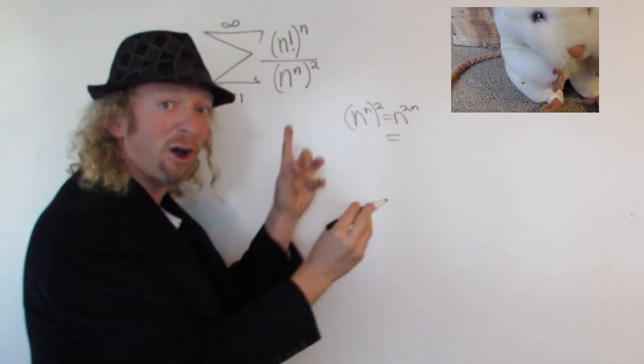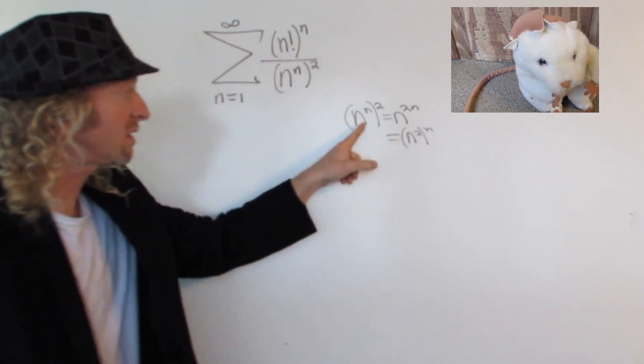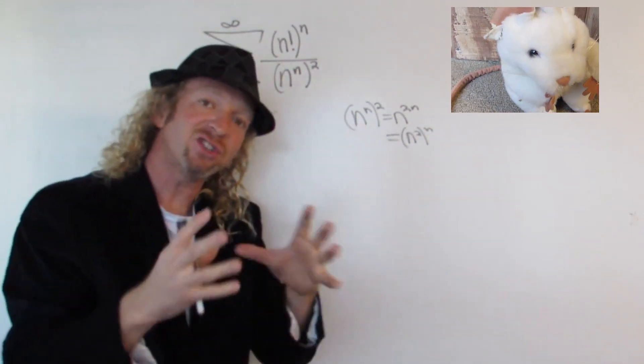Then you can rewrite this as follows: n squared to the n. So basically this can be written as some expression to the nth power.